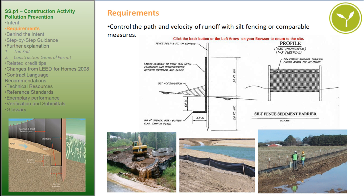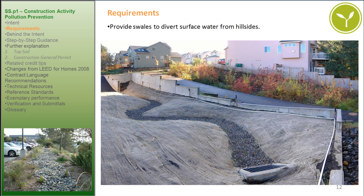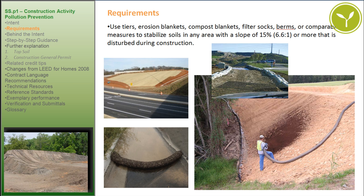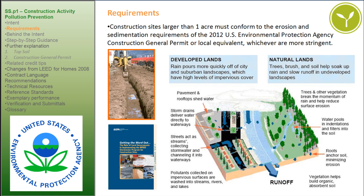Sample images for: controlling the path and velocity of runoff with silt fencing; protecting on-site storm sewer inlets, streams, and lakes with straw bales, silt fencing, silt socks, and rock filters; providing swales to divert surface water from hillsides; using erosion blankets, compost blankets, filter socks, and berms to stabilize soils on slopes of 15% or more; preventing air pollution from dust and particulate matter; and conforming to the 2012 EPA Construction General Permit requirements.